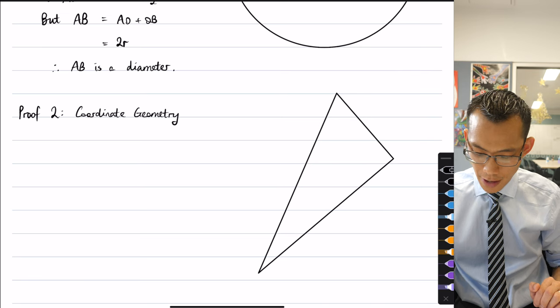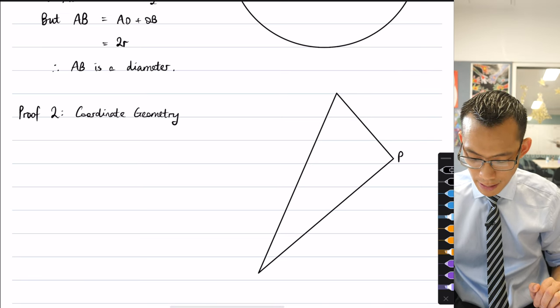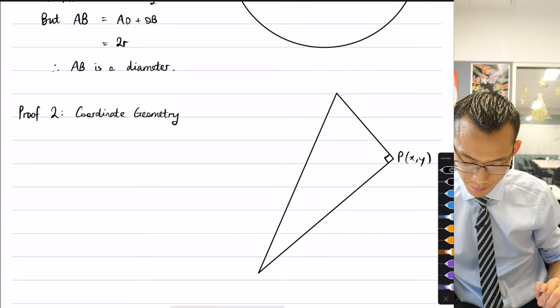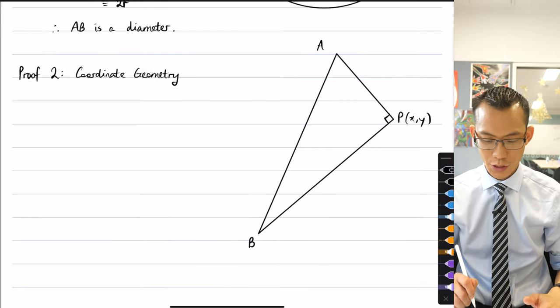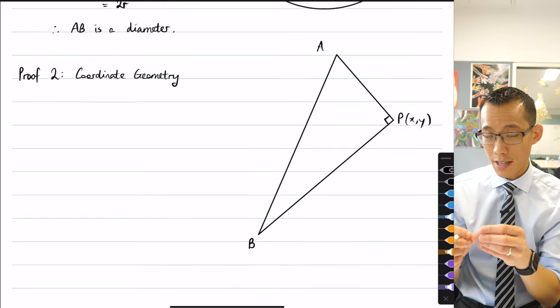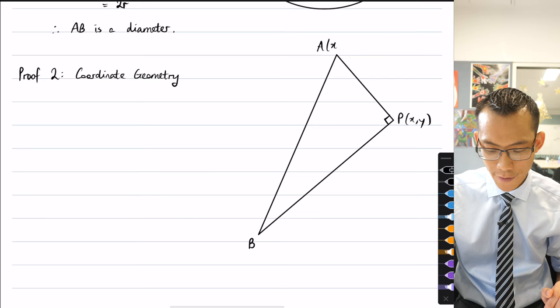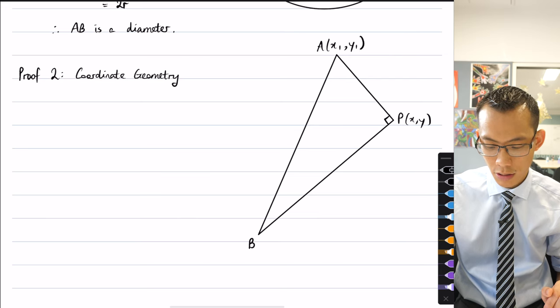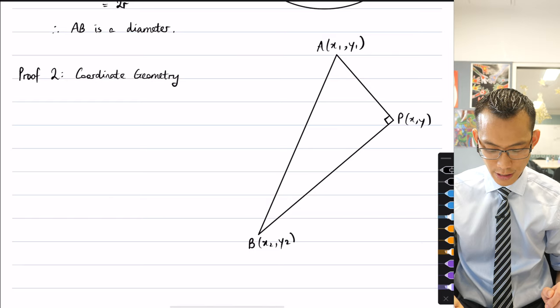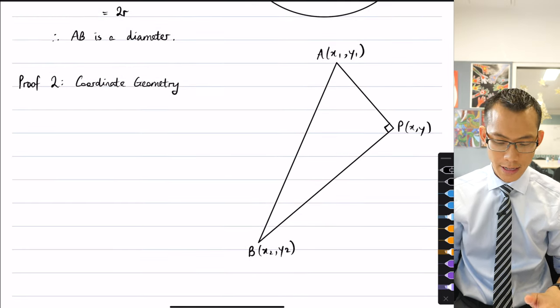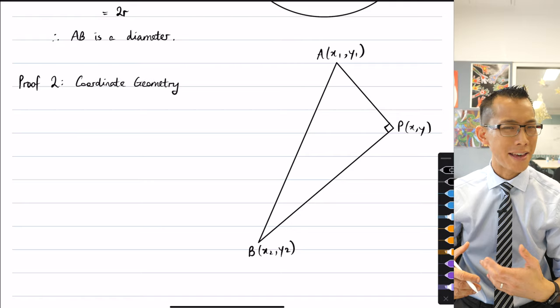All right, so if I again have some point P and it can move about, but what I know about it is that there's a right angle there. Okay, and then I've got some arbitrary A and some arbitrary B. So they are locked in some constant position, so they do actually have coordinates but I don't know what they are. So I'm just gonna call them x1, y1 and x2, y2, and the fact that I don't know where they are is another way of saying that this is generally true. They can be anywhere.